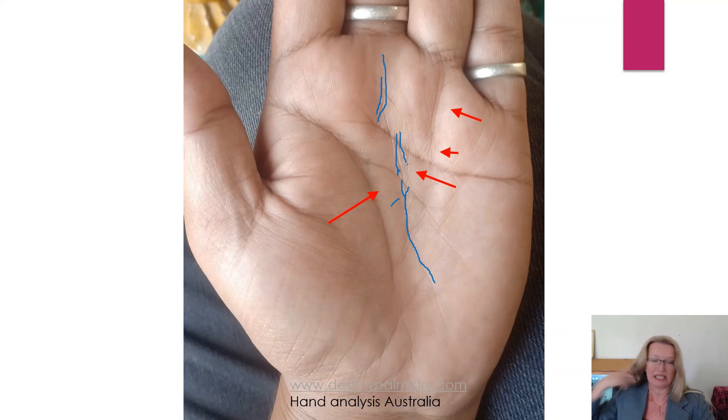Like in the 50s. Once the fate line goes beyond the heart line, which is this line here, then the age is beyond the age of 50.